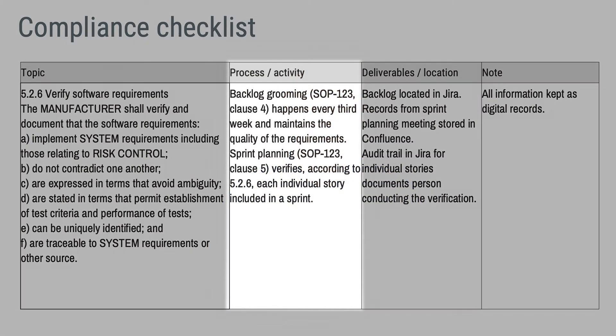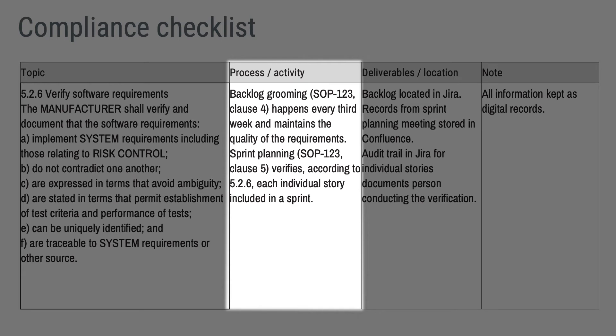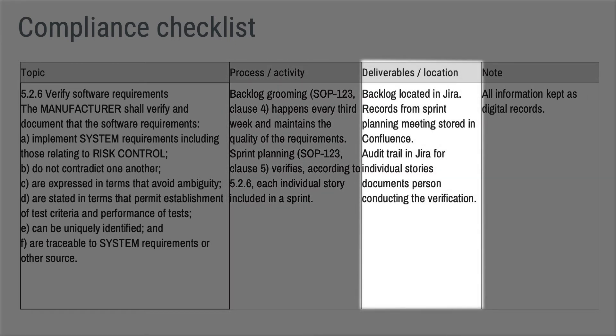Let's see how this can be captured in a checklist, starting with the Scrum approach. For the process, I provide a high-level explanation with references to a standard operating procedure, also known as SOP. In this example, I claim that the actual verification of requirements happens in the sprint planning activity. I point out both deliverables and where to find information. The requirements are kept through stories in a tool called Jira. Records from sprint planning are kept within a wiki tool called Confluence. The audit trail for stories shows who conducted the review. Note that for this example, no information is kept on paper - this is perfectly fine because all information is there and I argue it is documented.